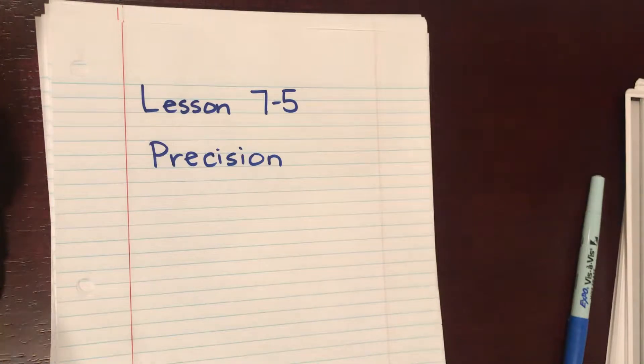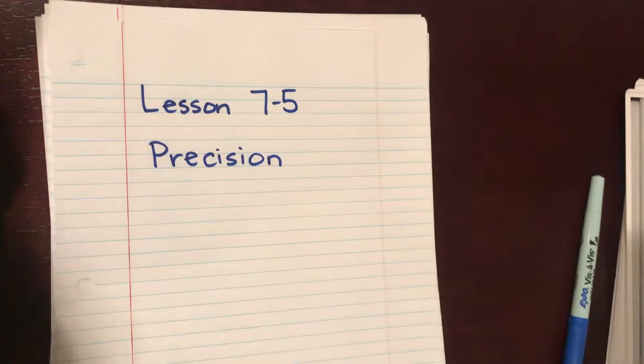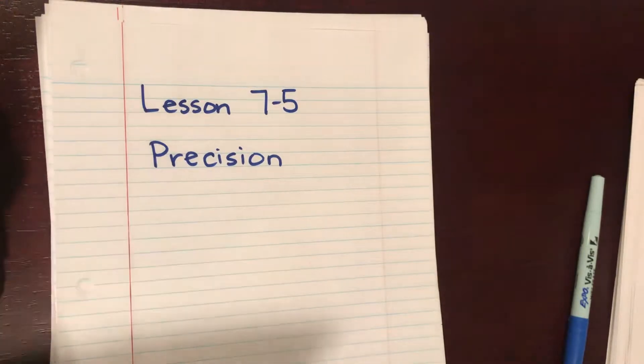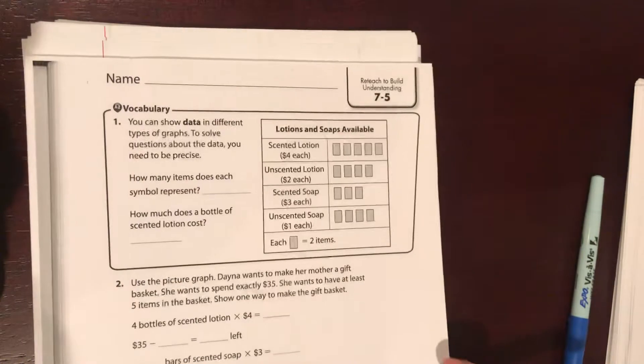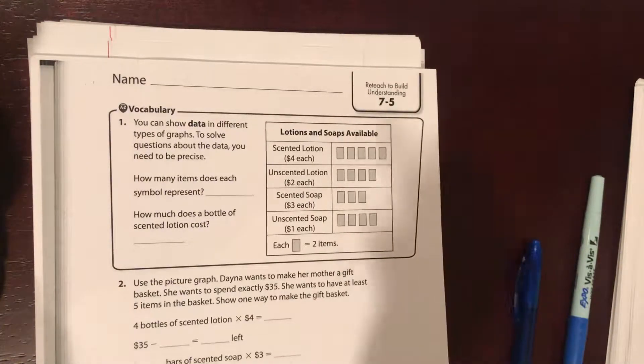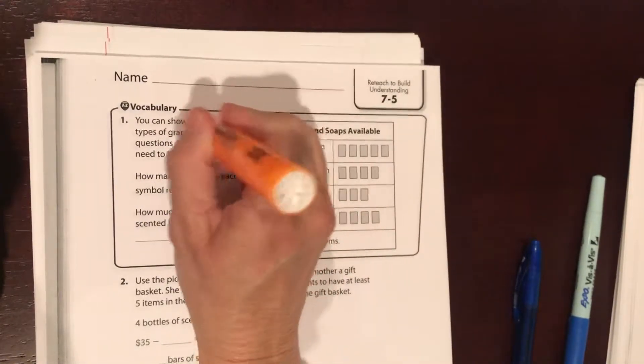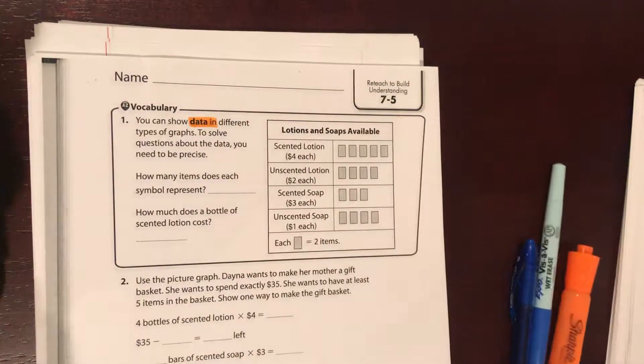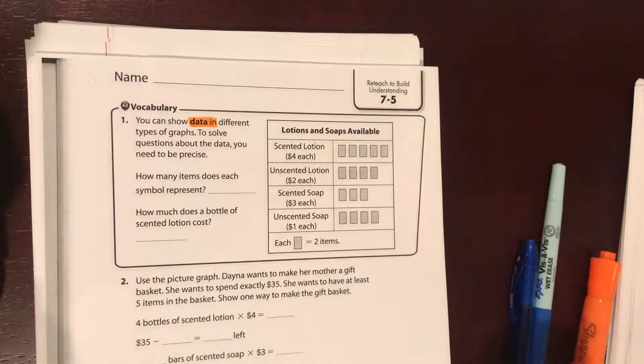Okay, lesson 7-5 precision. This means finding answers with accuracy. Data is information that we gather, and then we put our data into graphs.